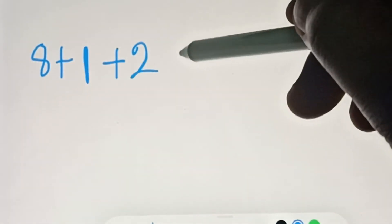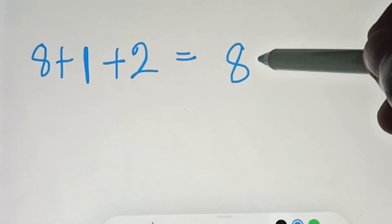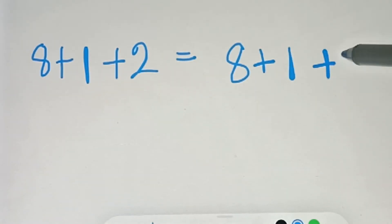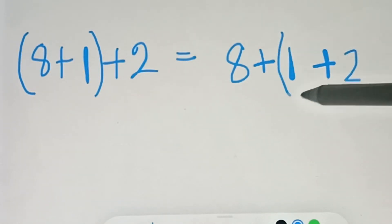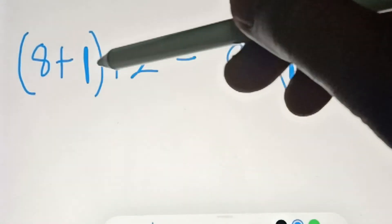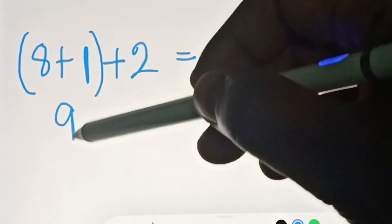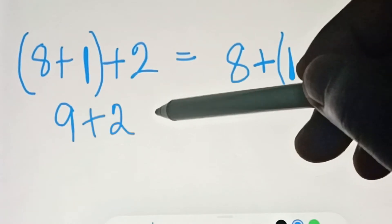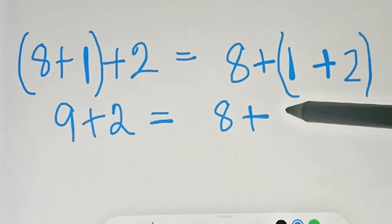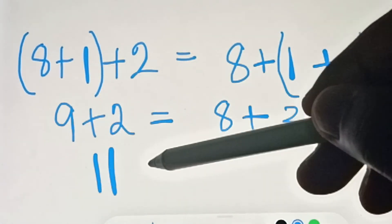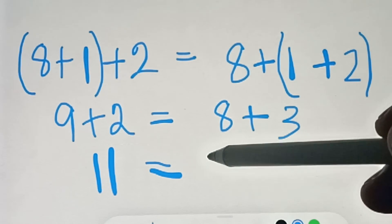Another example: if you have 8 plus 1 plus 2, that is equal to (8 plus 1) plus 2, which equals 8 plus (1 plus 2). On this side, 8 plus 1 is 9, plus 2 is 11. On the other side, 1 plus 2 is 3, and 8 plus 3 is also 11.